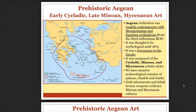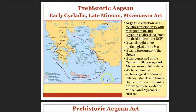Hello ArtF110 students, this is Maureen Currie welcoming you to week four. This week we're going to cover the cultures in the prehistoric Aegean. The Aegean Sea is the body of water surrounding a lot of islands and part of mainland Greece.